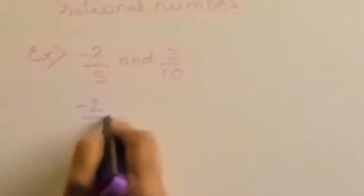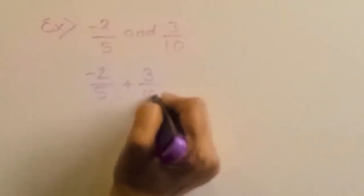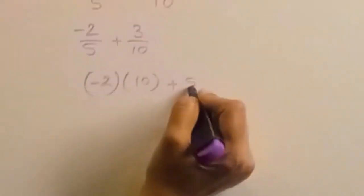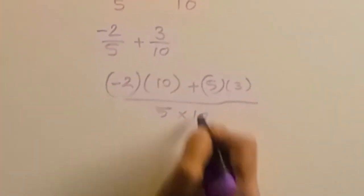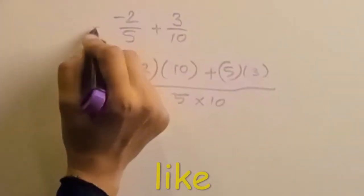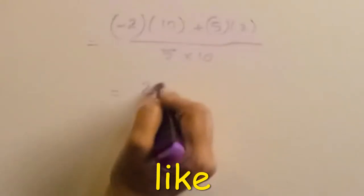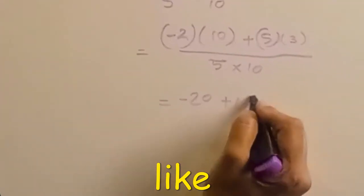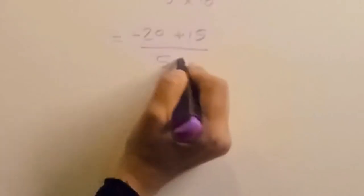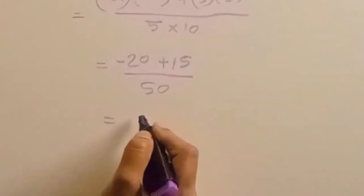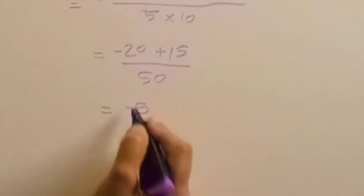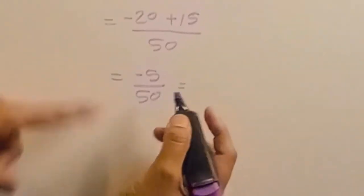This is the closure property. For example: minus 2 by 5 plus 3 by 10. We solve this as: minus 2 into 10 plus 5 into 3, upon 5 into 10. That gives minus 20 plus 15 upon 50. Since minus plus is always minus, we get 20 minus 15 is 5, and the bigger number is 20, so the sign is minus, giving minus 5 upon 50.